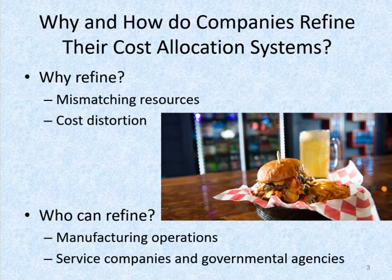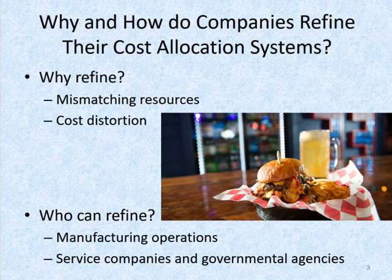As we'll see in the following sections, companies often refine their cost allocation systems to minimize the amount of cost distortion caused by simpler cost allocation systems. By refining their cost systems, companies can more equitably assign indirect costs, such as manufacturing overhead, to their individual jobs, products, or services. Simple systems don't do a very good job of matching the cost of overhead resources with the products.